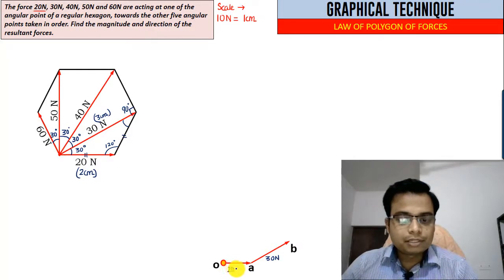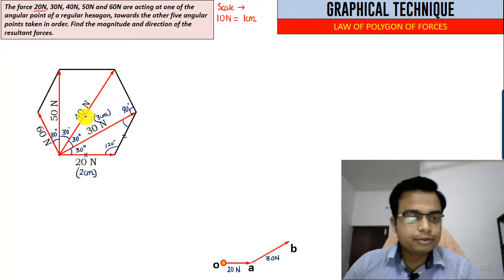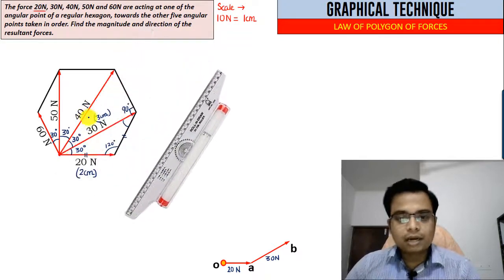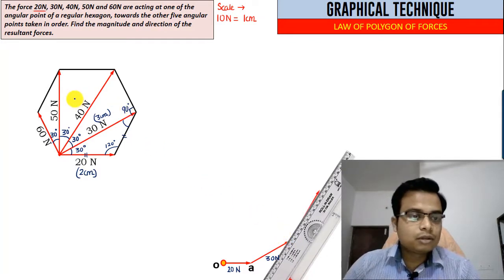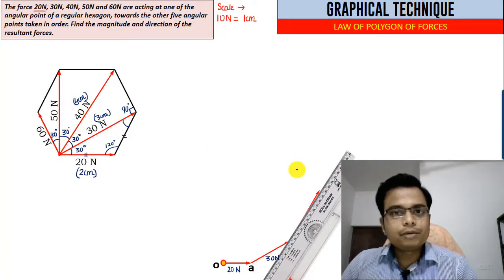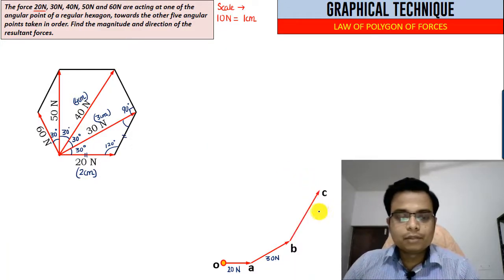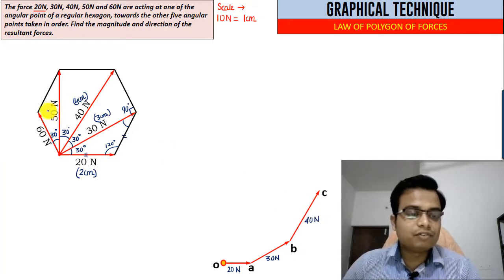In the same manner, you need to keep your roller scale aligned along the 40 Newton force, roll it until you reach point B, draw a line. This line that you've just drawn is having a length of 4 centimeters, representing a force of magnitude 40 Newtons. Then finally we have this 50 Newton force, represented by a line of 5 centimeters.